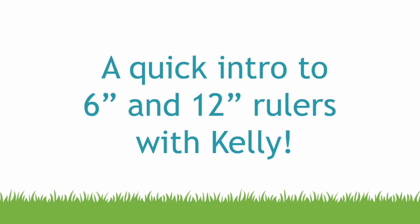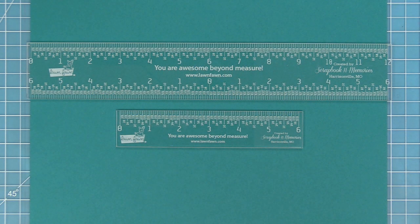Hello and welcome to another Lawn Fawn video. Today we are quickly introducing our new 6 inch and 12 inch rulers. These rulers are so awesome and they are made by our friends over at Scrapbook and Memories, which is an amazing brick and mortar store in Missouri.